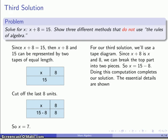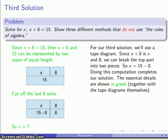And again, the essential details are going to be the thing shown in green, along with our two diagrams here. And if you want to, you could probably dispense with the first diagram here. The second diagram is sufficient by itself. We've hacked off these 8 pieces here. And so what's left over is going to be the 15 minus 8.